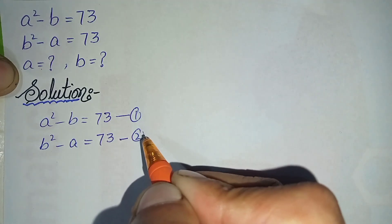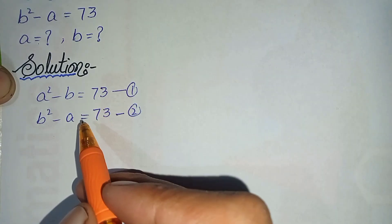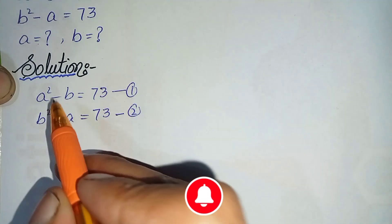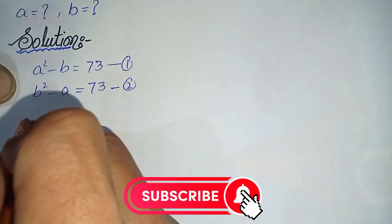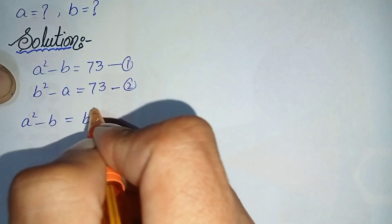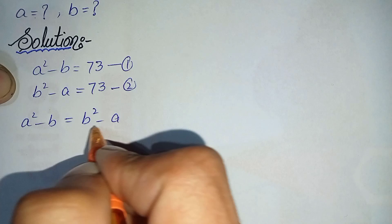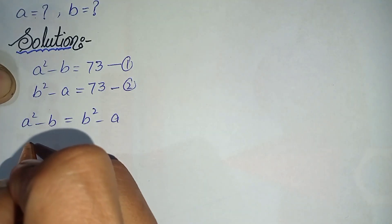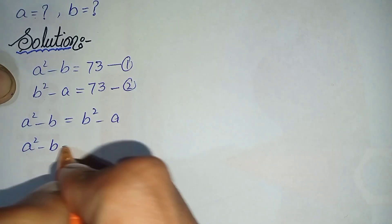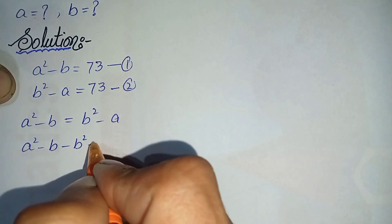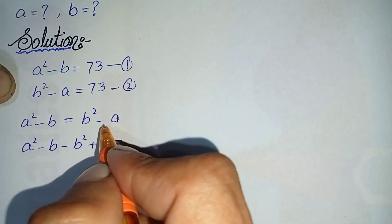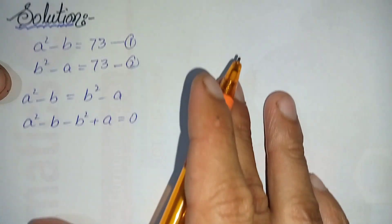Since the right-hand sides of both equations are the same, we will compare only the left-hand sides. So a squared minus b will be equal to b squared minus a. We shift both terms to the left-hand side, giving us a squared minus b minus b squared plus a equals zero, since a sign changes when a term is shifted to the other side.